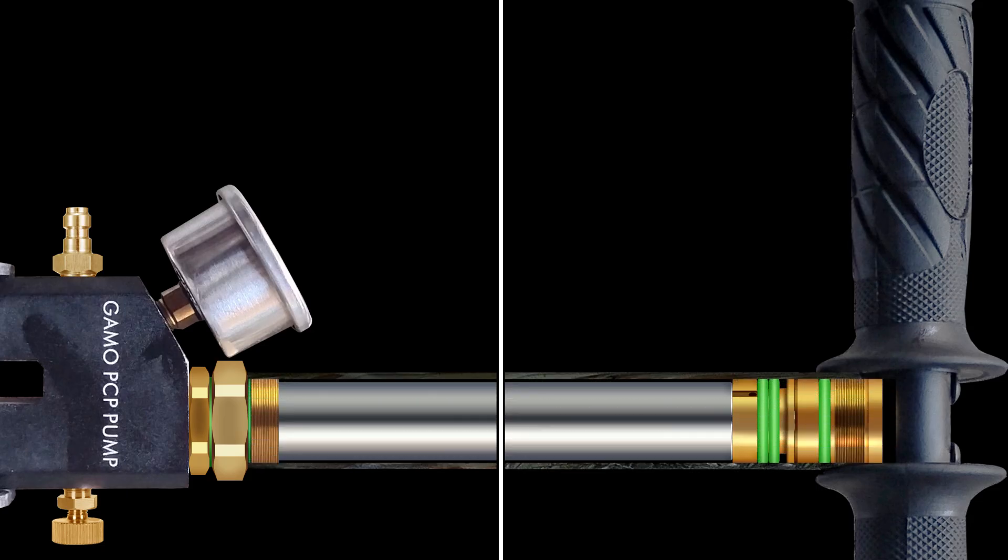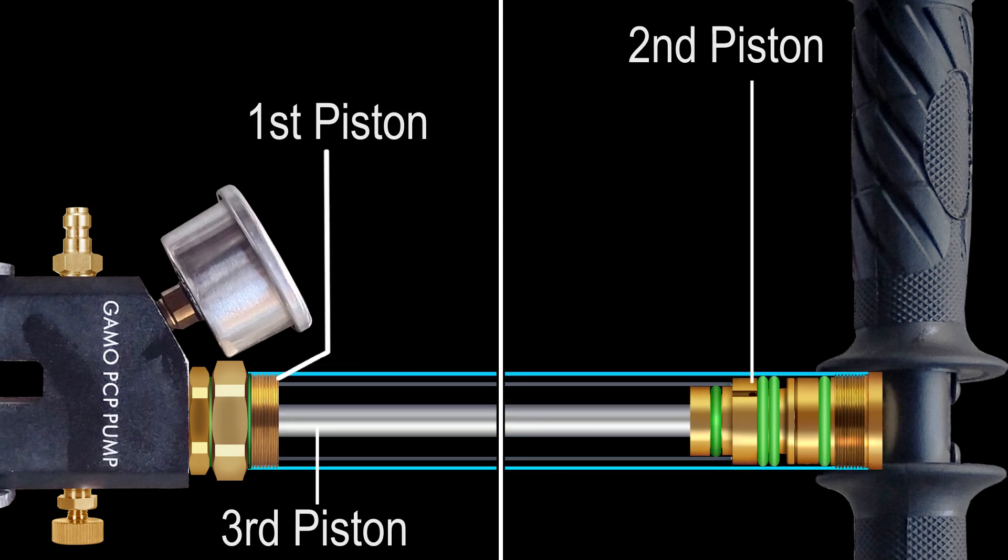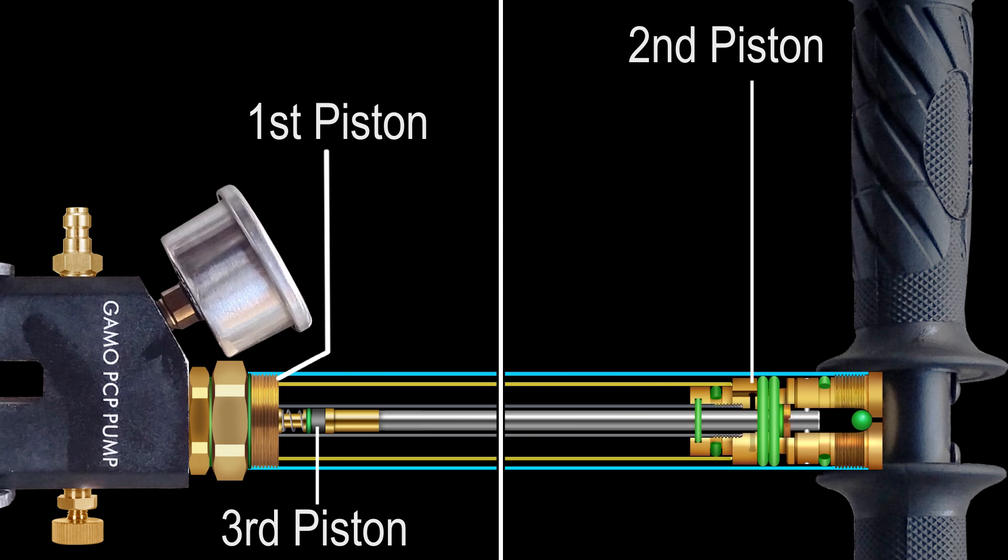Now let's see the cross-sectional view. The pump consists of three tubes and three pistons. The first and third pistons are movable, while the second piston is fixed in place.